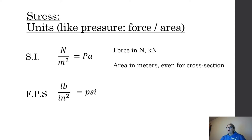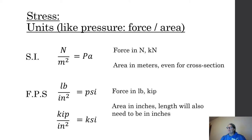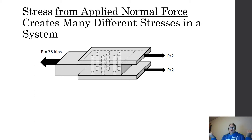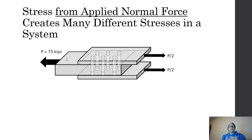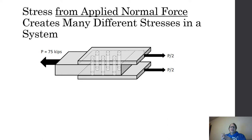The units are the same — stress is still force over area: Pascals (N/m²), KSI, or PSI. Watch your units, as they direct how to set up your equation. When we apply an axial load of 75 kips and cut to find the internal normal force, we get 75 kips. If P is 75, then P/2 is 37.5 kips, and from that we can calculate the normal stress on a 1×10 inch plate.